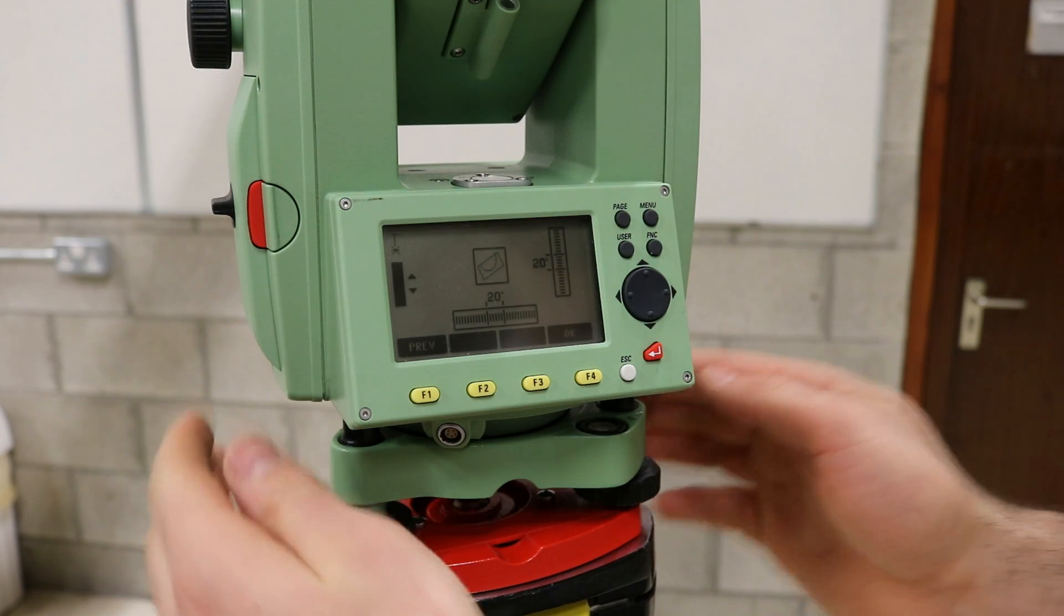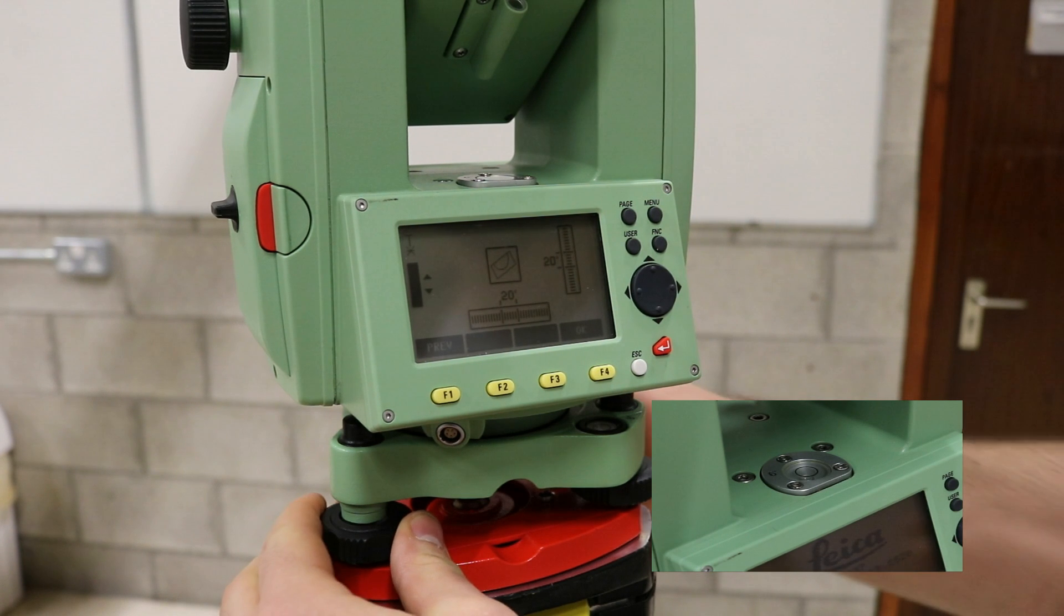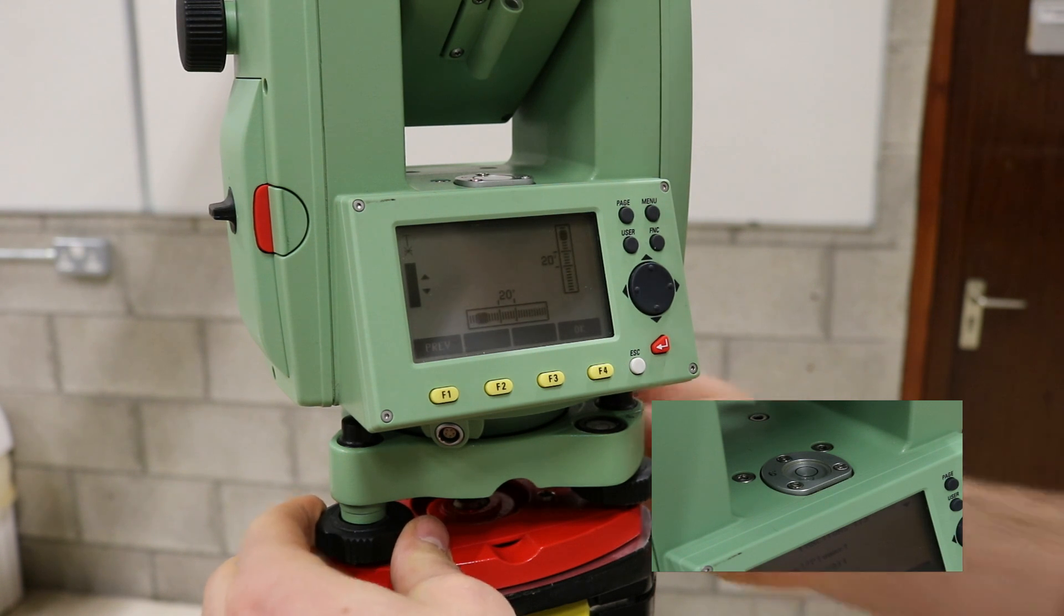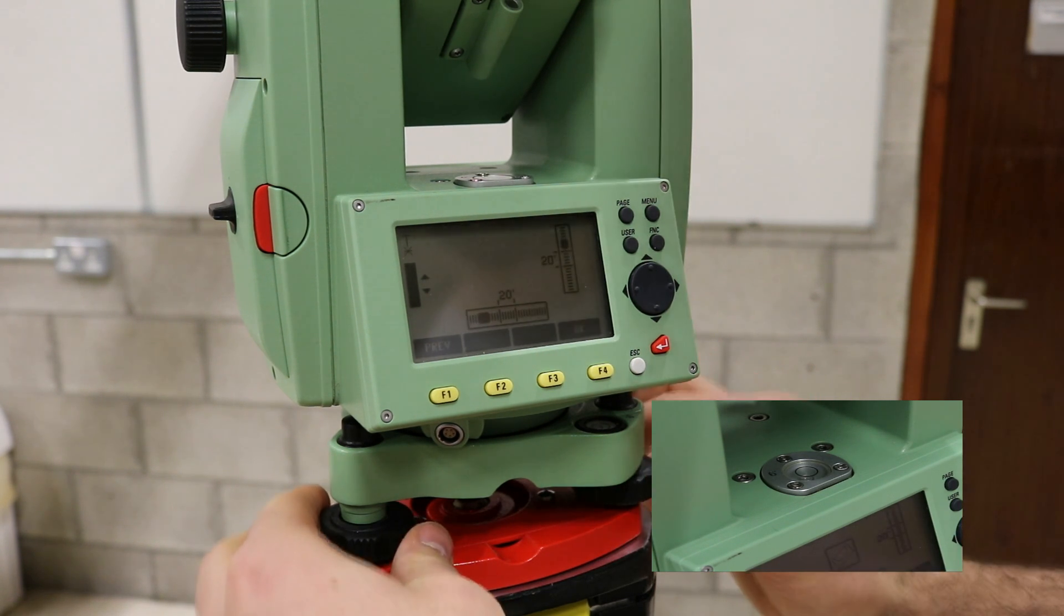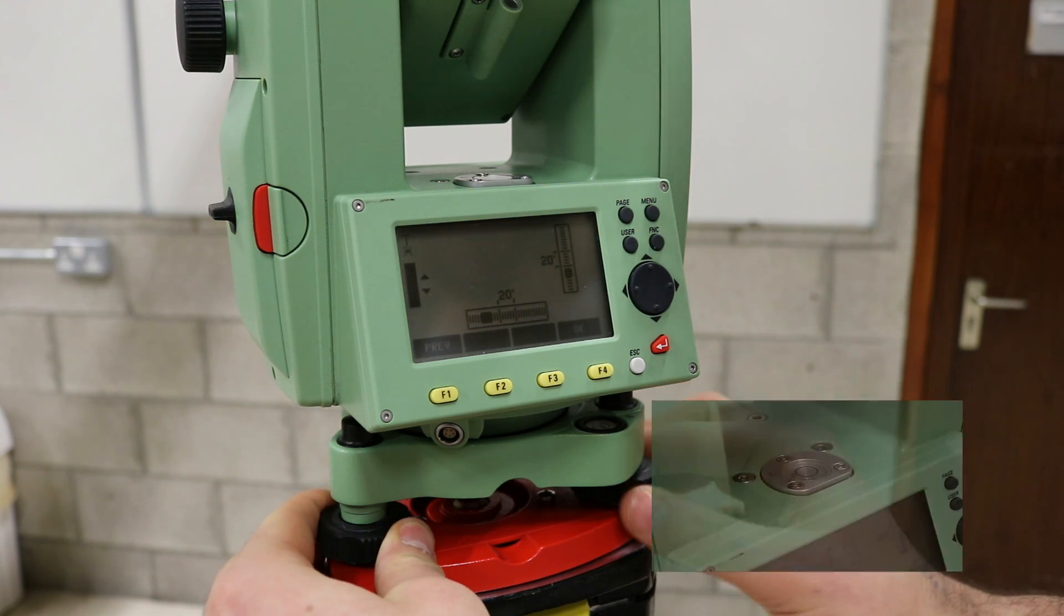Following this, level the total station using the foot screws at the bottom of the machine as indicated with the arrow. The bubble level at the top of the total station is a good indicator on how level the machine is, but the digital level that is on screen is the most accurate measure.